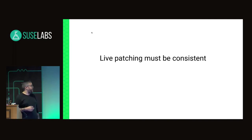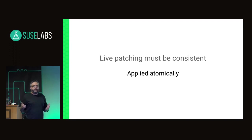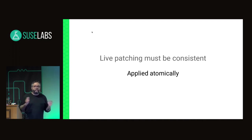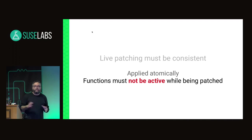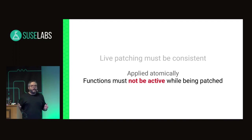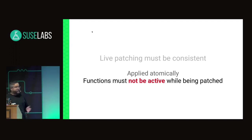One thing assumed for live patching is that it must be consistent — applied atomically. If you are patching a set of ten functions, you must patch all ten at once; you cannot have a state where five are patched and five are not. Also, you must ensure that the functions being patched are not active. If a function is on the stack waiting to resume when control flow returns, and you patch it, it will run its older version when it returns — and that's not something you want.